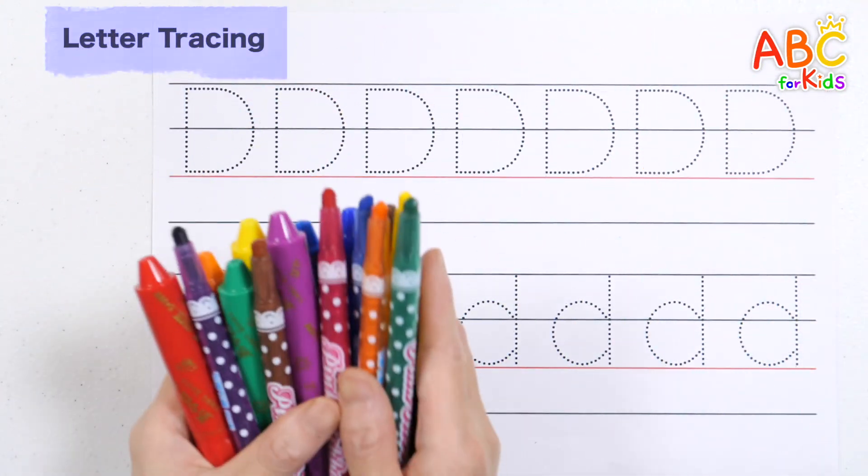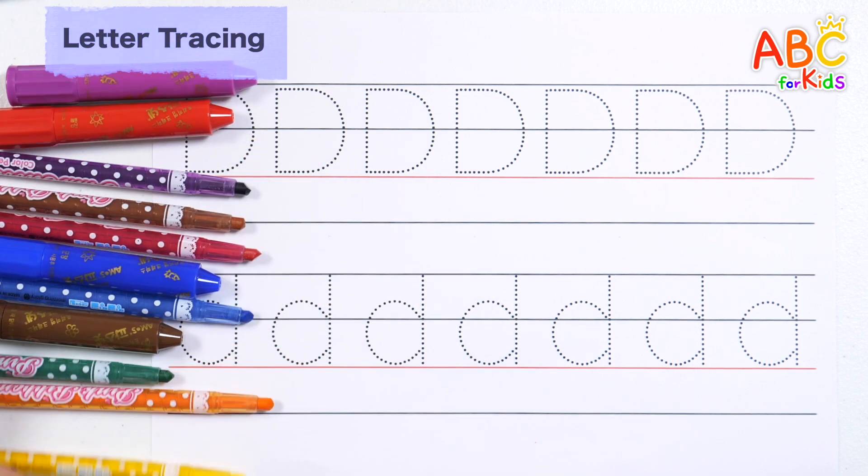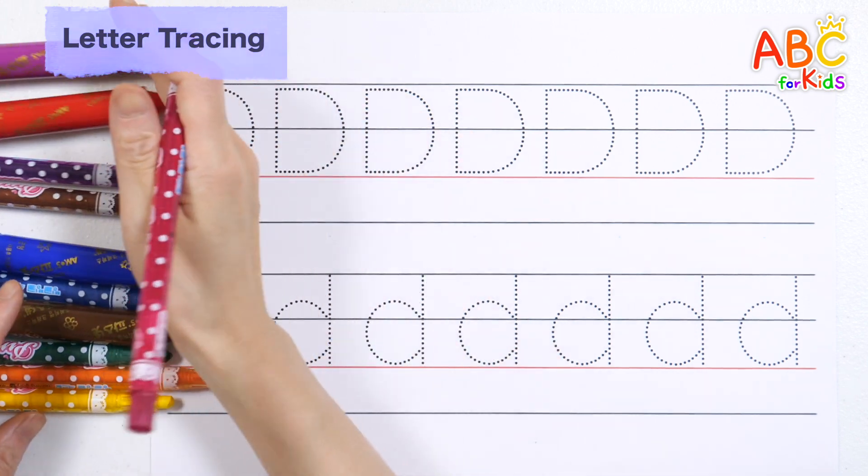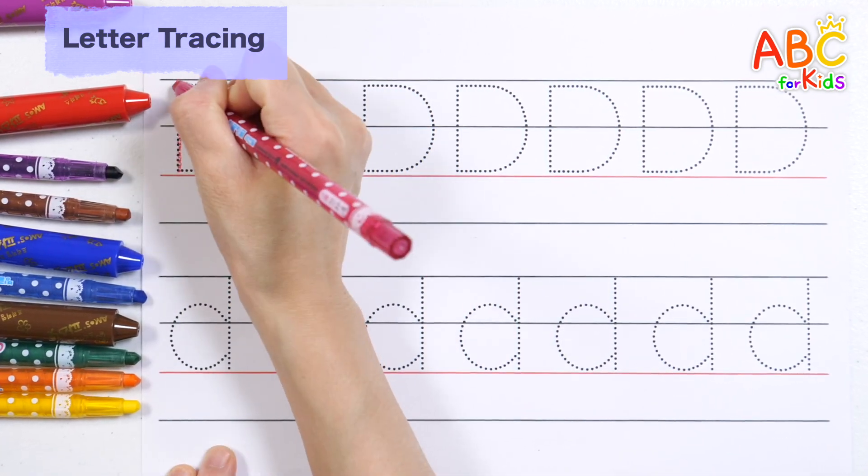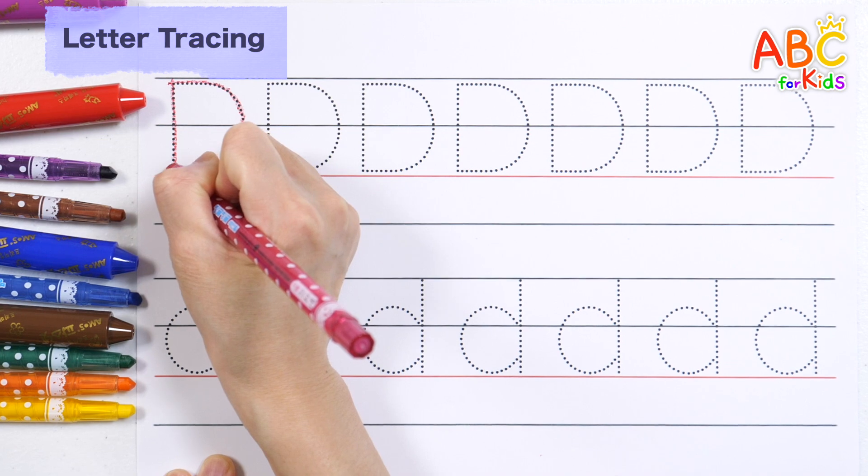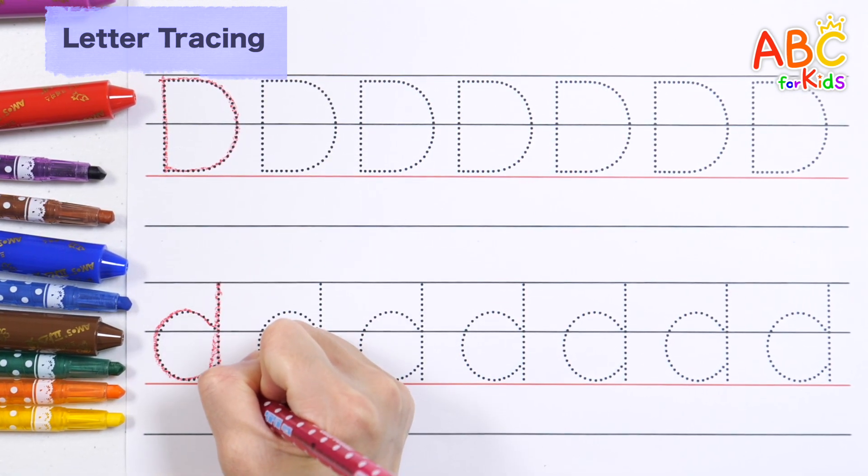Let's write the letter D uppercase and lowercase in rainbow colors. Let's write D in red. Uppercase D. Lowercase D.